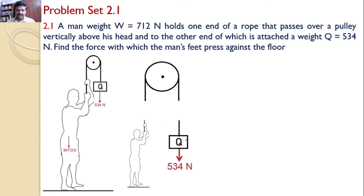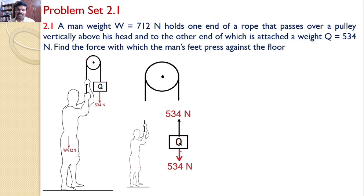Let us consider weight Q. In the free body diagram of Q, the weight of 534 Newtons acts downwards and the rope is attached at the other end. By considering the equilibrium of weight Q, the force in the rope must be upwards with a magnitude of 534 Newtons.